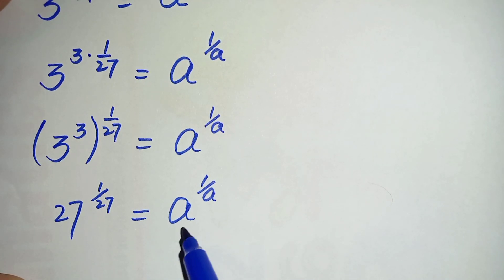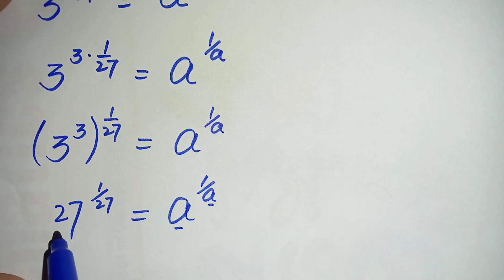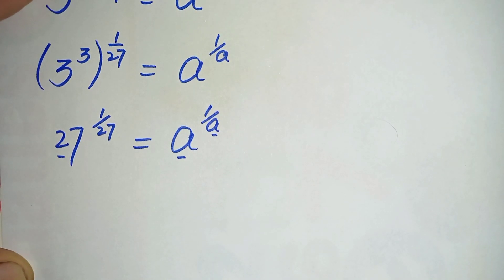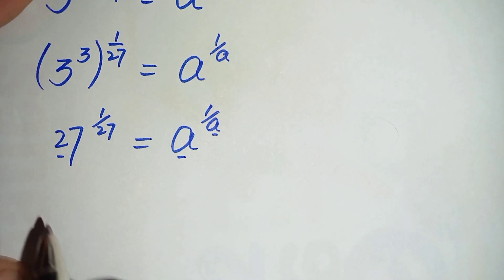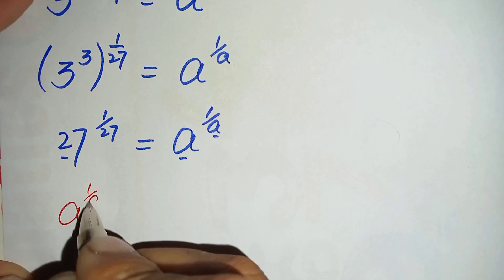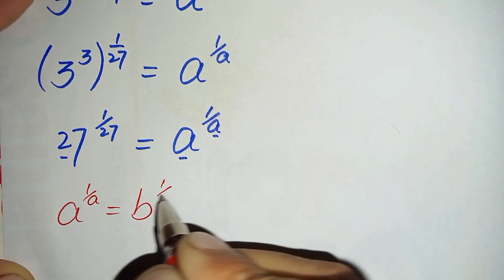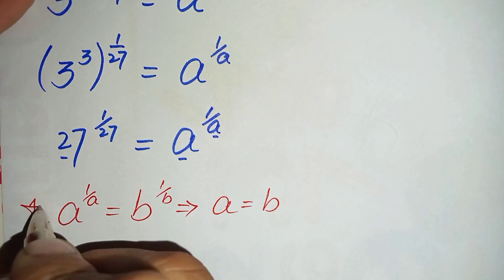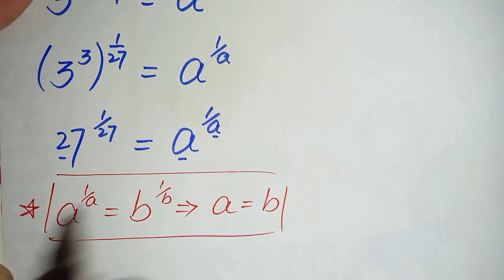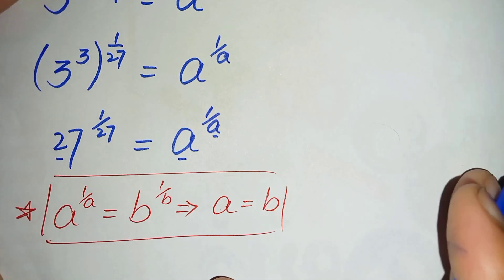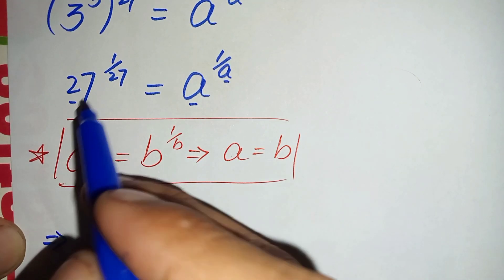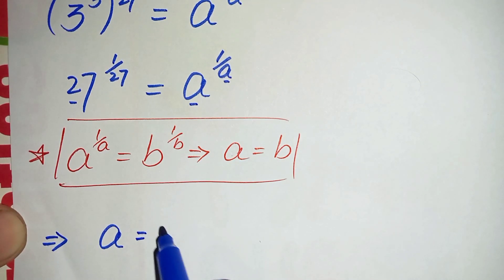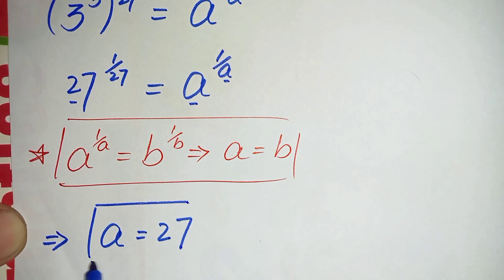Now look at both sides — on both sides the base is the same form: the number and the denominator of the power are the same. Here it is 27 and 27. So we will use this exponential math property: when a raised to power 1 over a is equal to b raised to power 1 over b, then a is equal to b. Using this property here, a is 27 and b is a, so comparing bases or powers gives us the same result. Therefore the value of a is 27.